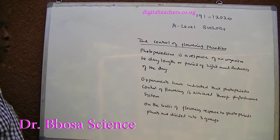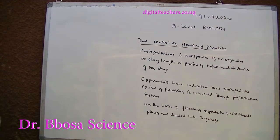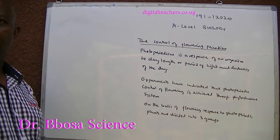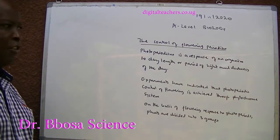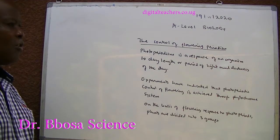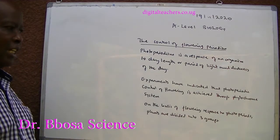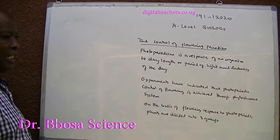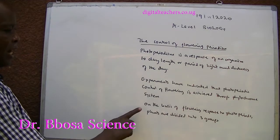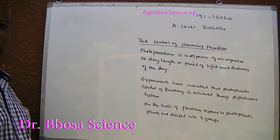On the basis of flowering response to photoperiods, plants are divided into three groups.